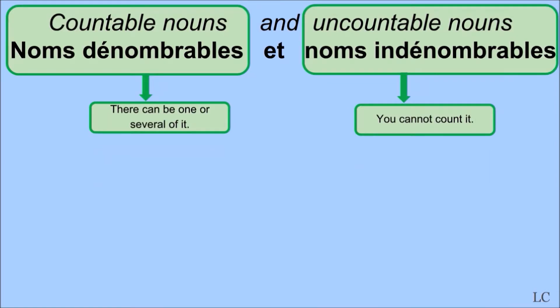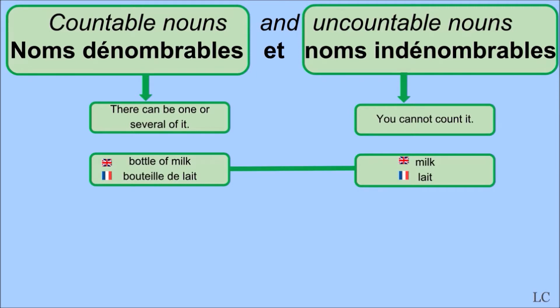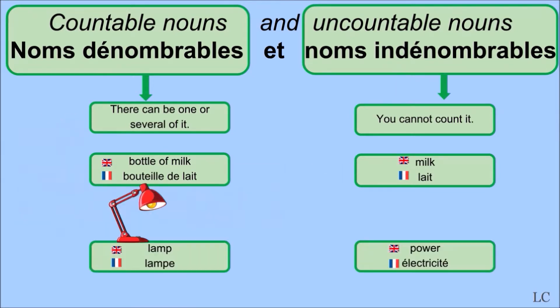Next we're going to talk about countable nouns, nom dénombrables, and uncountable nouns, nom indénombrables. Don't worry, you don't have to be able to pronounce them in French. This is as simple as it sounds — if you can count the thing you're talking about, then it is countable. For example, bouteille de lait, bottle of milk: you can have one bottle of milk, two bottles of milk, or several bottles of milk. Another example: une lampe — you can have one lamp, two lamps, or several lamps.